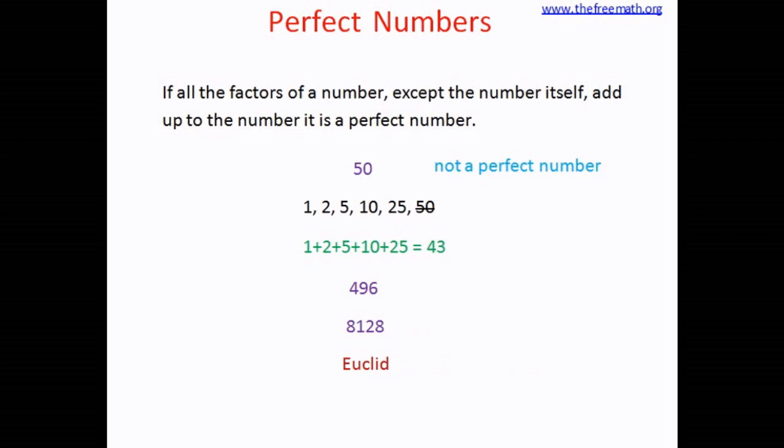Now if you look at all the perfect numbers you have seen so far, which are 6, 28, 496, and 8128, what do you see here? How are all these numbers? All these numbers are even numbers.